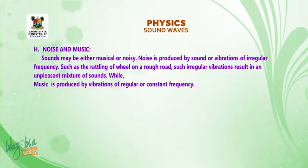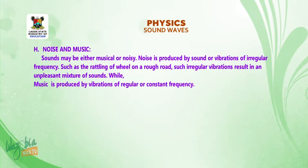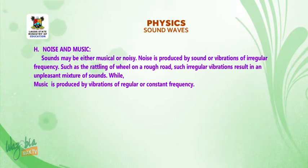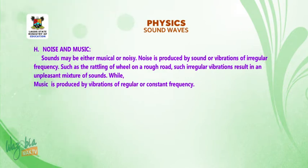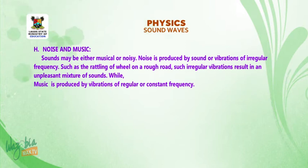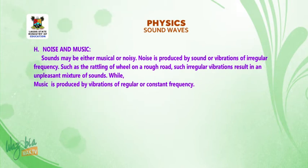Noise and music. Sounds may be either musical or noisy. Noise is produced by sound or vibrations of irregular frequency, such as the rattling of a wheel on a rough road. Such irregular vibrations result in an unpleasant mixture of sounds, while music is produced by vibrations of regular or constant frequency to produce pleasant sounds.